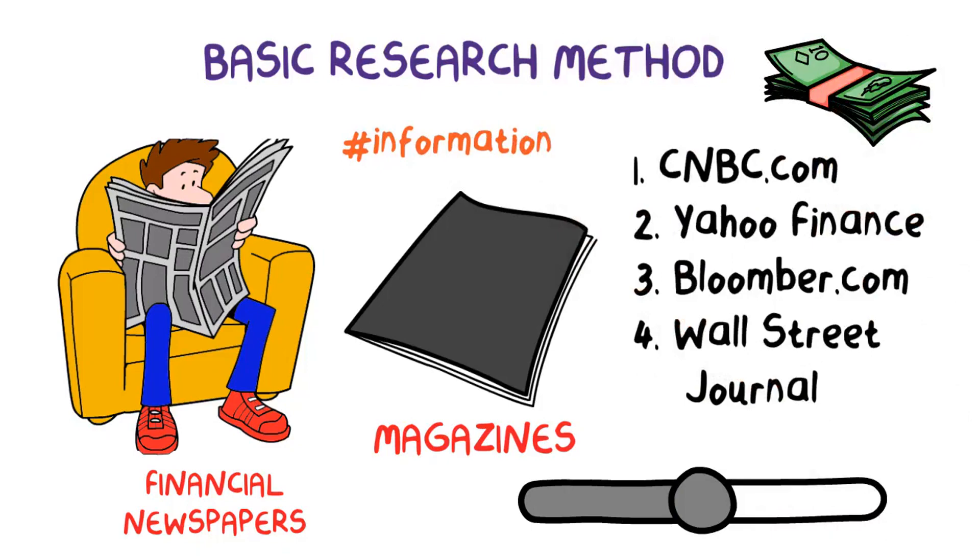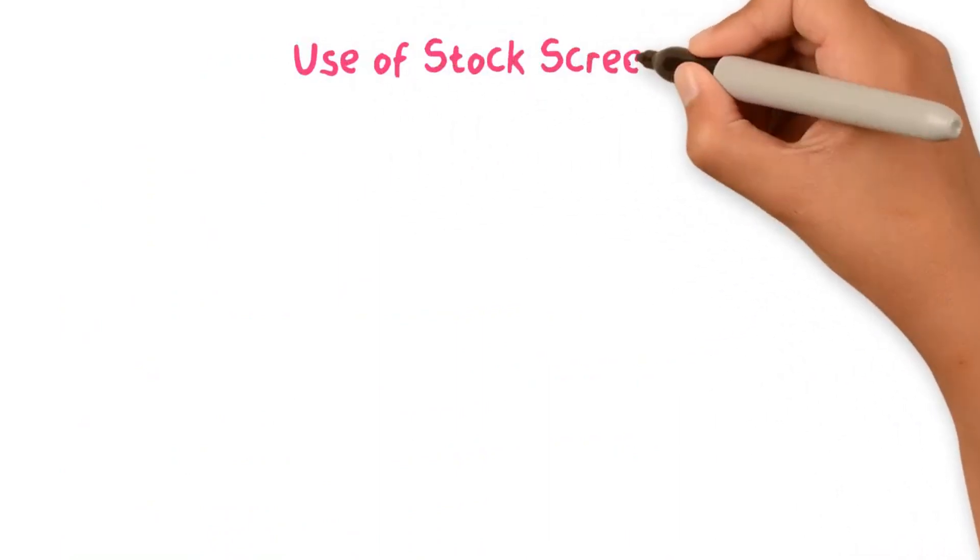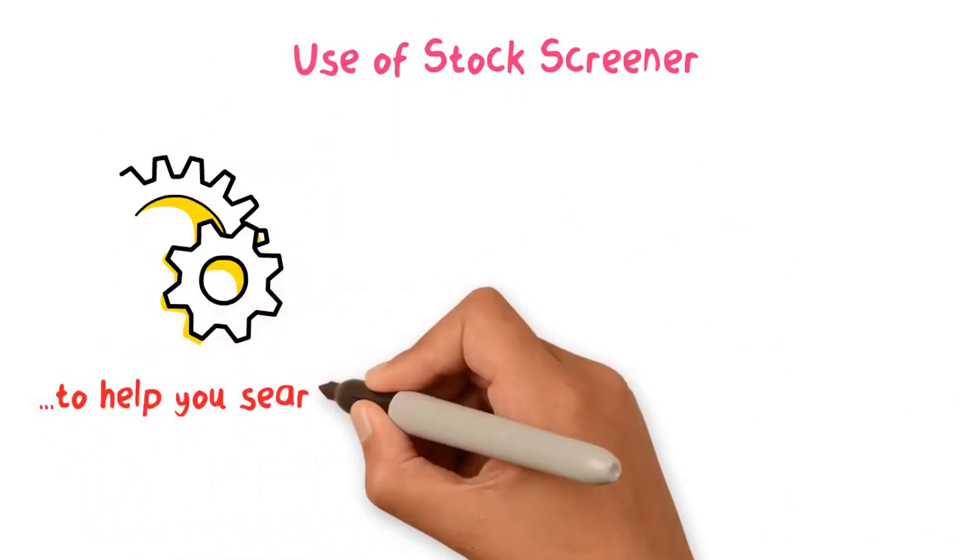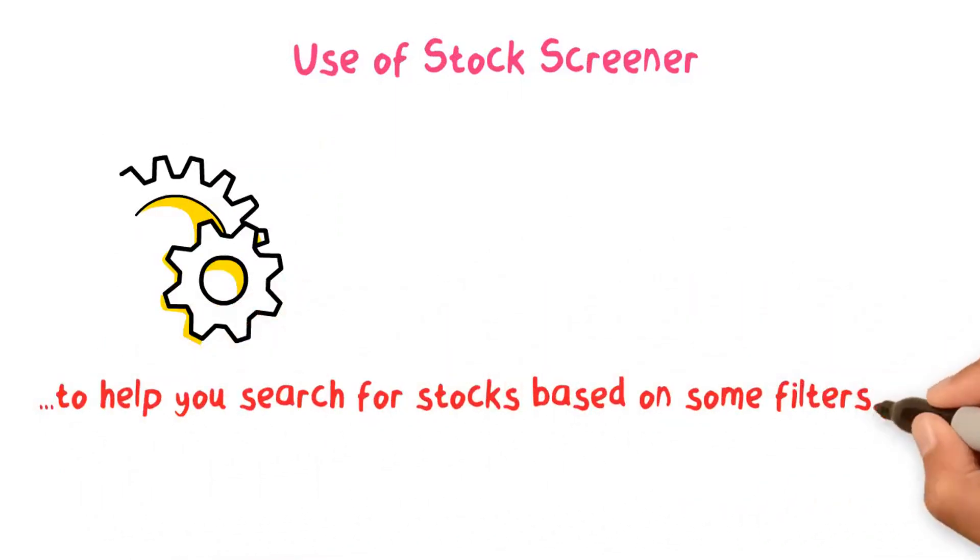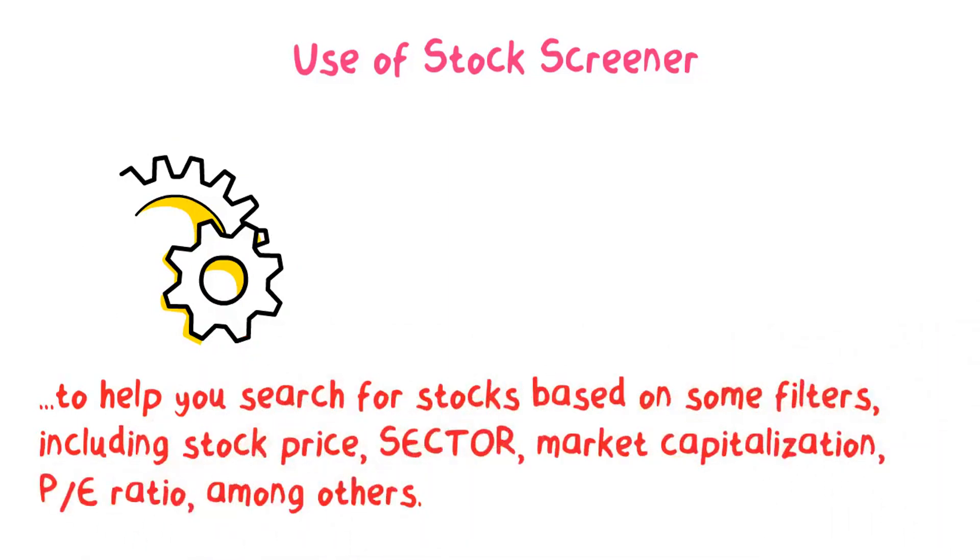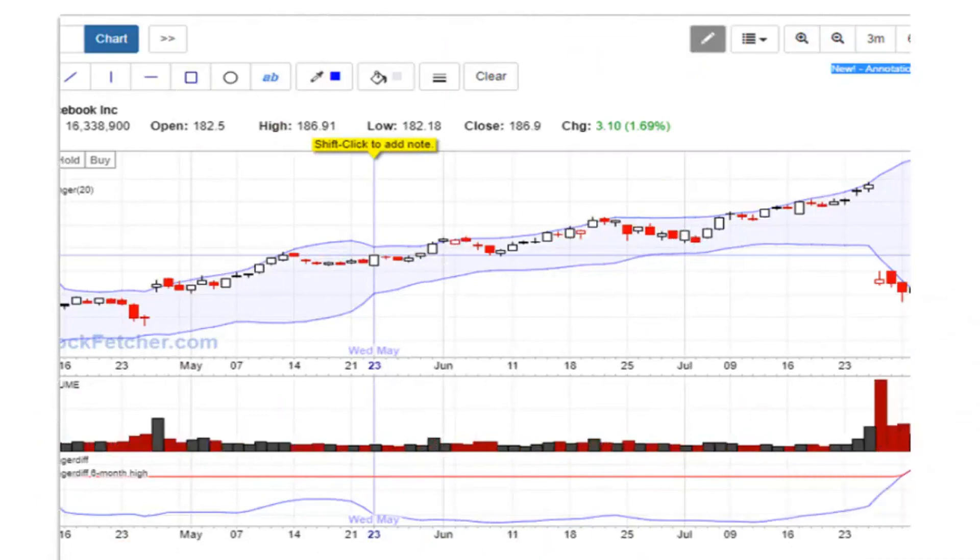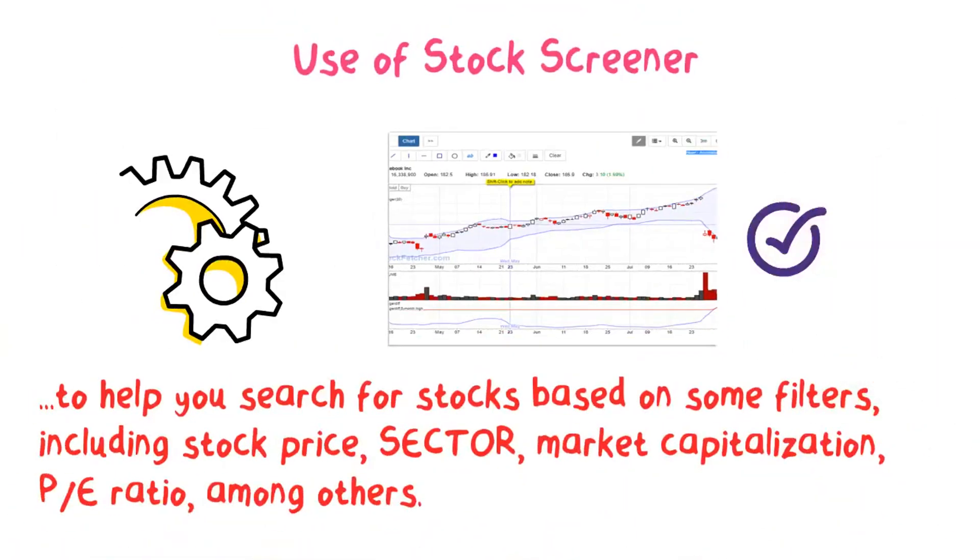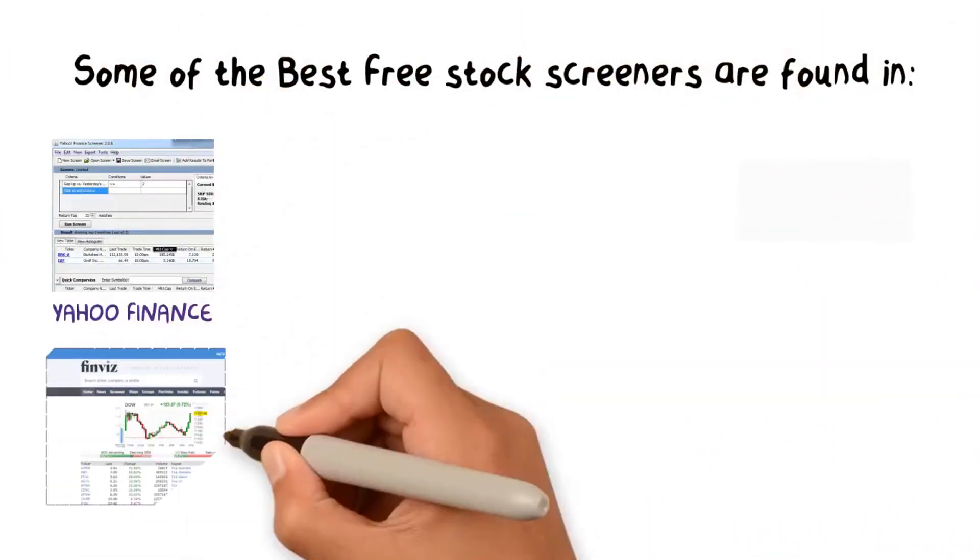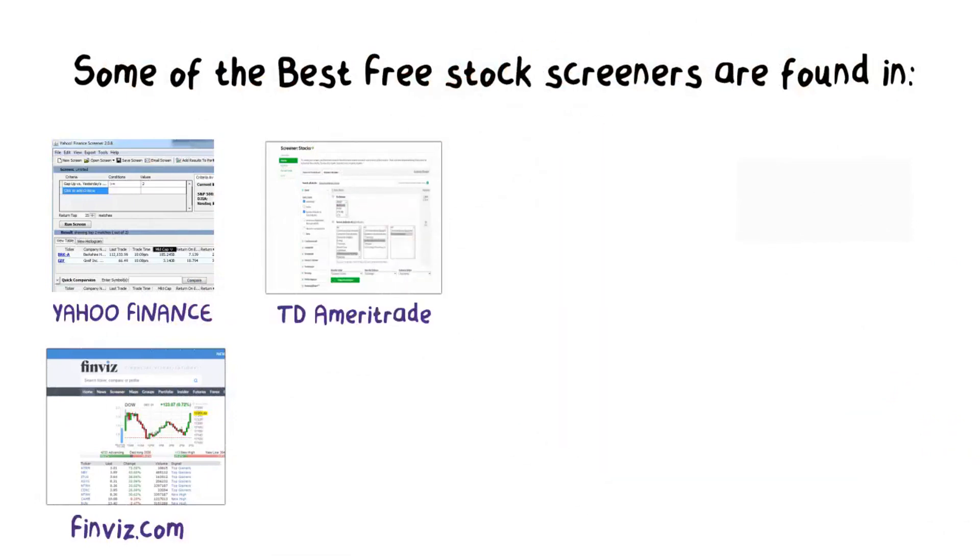The second research method is to pick stocks based on the use of a stock screener. A stock screener is software or a tool designed to help you search for stocks based on some filters including stock price, sector, market capitalization, P/E ratio, among others. You can find stock screeners in many financial websites or trading platforms. Some of the best free stock screeners are found in Yahoo Finance, Finviz.com, TD Ameritrade, and Benzinga, among others.